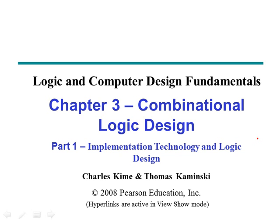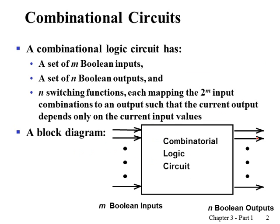In Chapter 3 we are going to study how to design a system based on combinational circuits. The first part covers design procedures and implementation technology. Any combinational circuit can be viewed as m boolean inputs with n boolean outputs, where each output is dependent upon all of those inputs. We can think of having n functions with m variables.